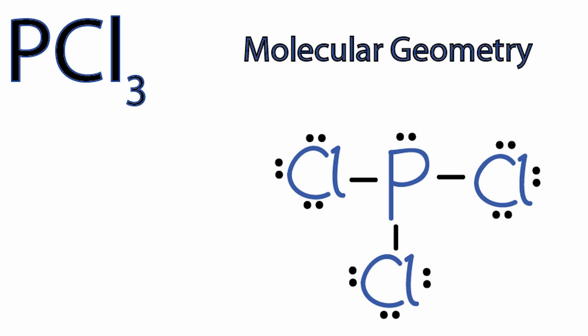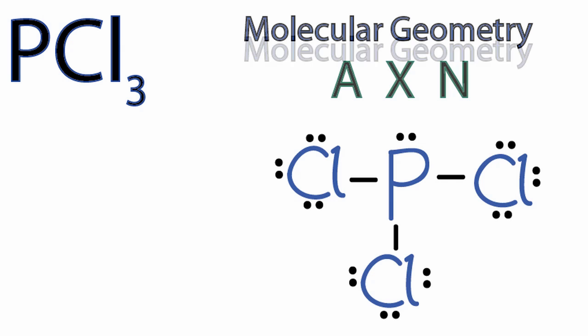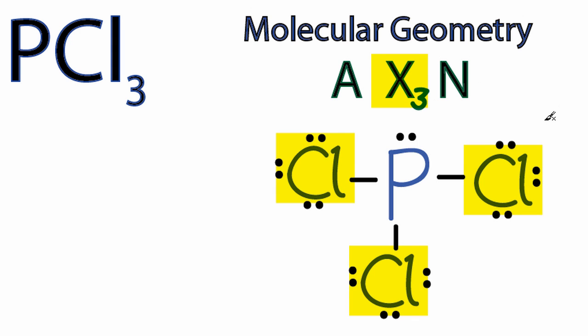To help us predict that, we'll use the AXN notation. So A, that's our central phosphorus atom, we have one of those. X is the number of atoms attached to that central phosphorus atom, so we have three chlorines, and then N, that's the number of lone pair electrons, unbonded electron pairs, and we have that one right there above the phosphorus, so we'll put a one right here.